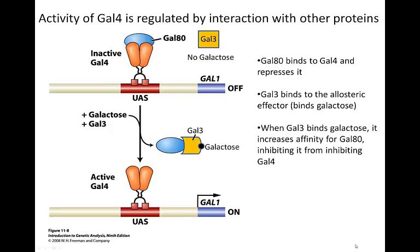Here's the big picture: when galactose is not present, we don't want to transcribe the gal genes. When galactose is present, we do. However, this is more complicated than the simple prokaryotic case where the repressor responded directly to the effector. Here there are additional proteins important in regulating the activity of GAL4.